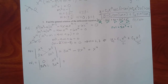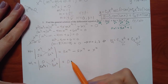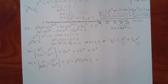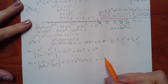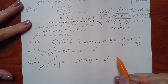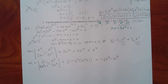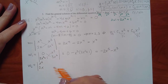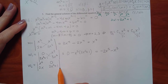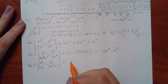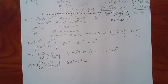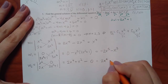Computing W1 by determinant: zero times x cubed minus x cubed times the f(x) = negative x cubed times (2x squared plus 1) = negative 2x to the fifth minus x cubed. For W2: x squared times f(x) minus zero, distributing gives 2x to the fourth plus x squared.